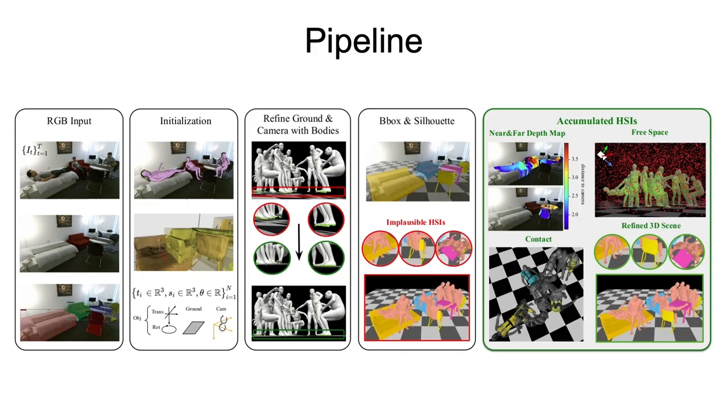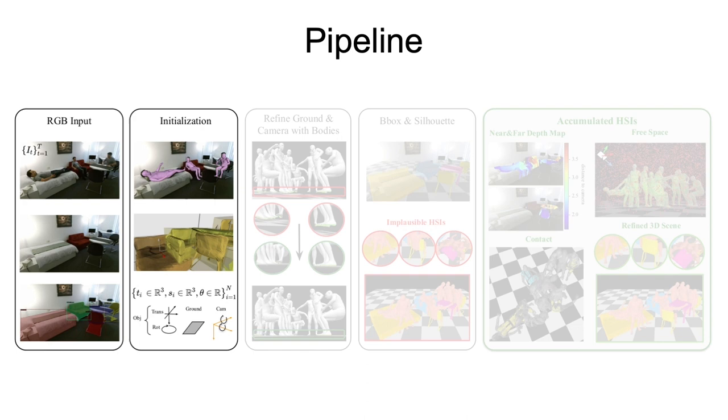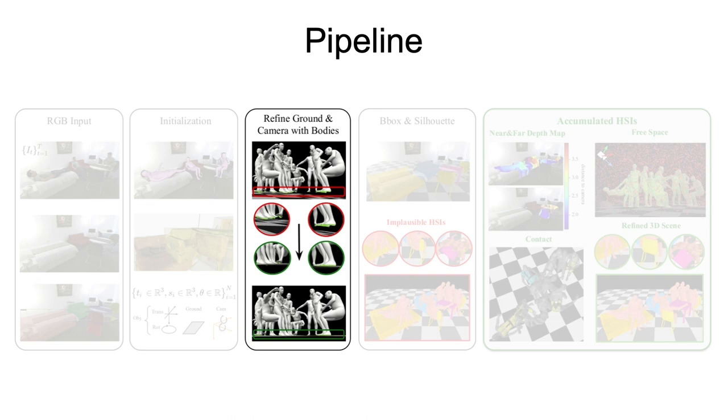MOVER is an optimization-based approach. We initialize our approach using separate estimates for the 3D humans from SMPL-X and PARE, the 3D scene and the ground plane from Total3D Understanding. For their estimated body poses, we predict contact vertices for all bodies using POSA.